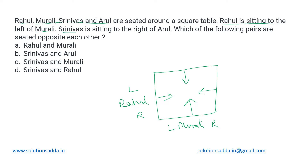Now Srinivas is sitting to the right of Arul. If we make Arul sit over here, then since he is facing inside, this will be his right and this will be his left. So towards Arul's right there is Srinivas, meaning Srinivas would be over here. For him, this will be right and this will be left.